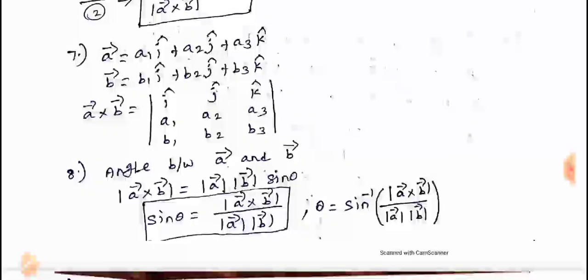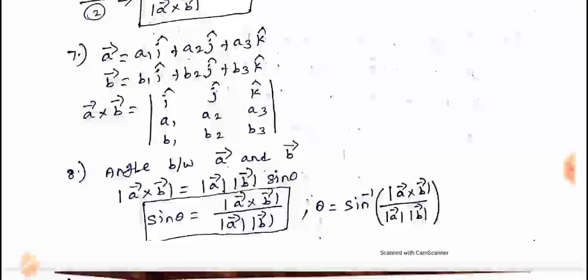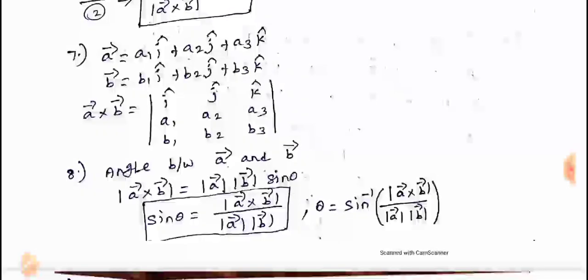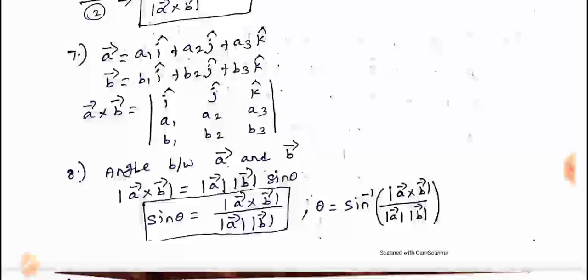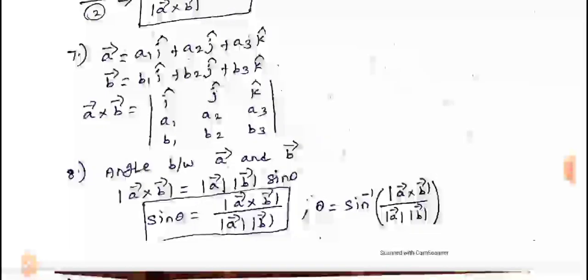Angle between A vector and B vector using cross product: from the definition, A cross B equals modulus of A times modulus of B times sin theta times n cap. Taking the modulus, sin theta equals modulus of A cross B divided by modulus of A times modulus of B. Therefore, theta equals sin inverse of modulus of A vector cross B vector divided by modulus of A times modulus of B.